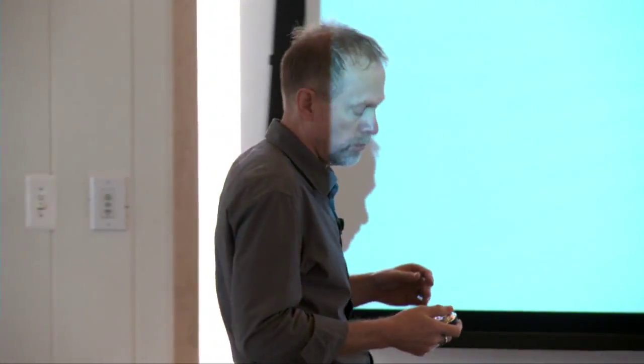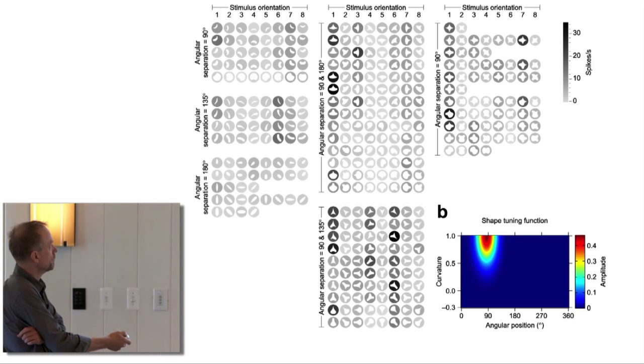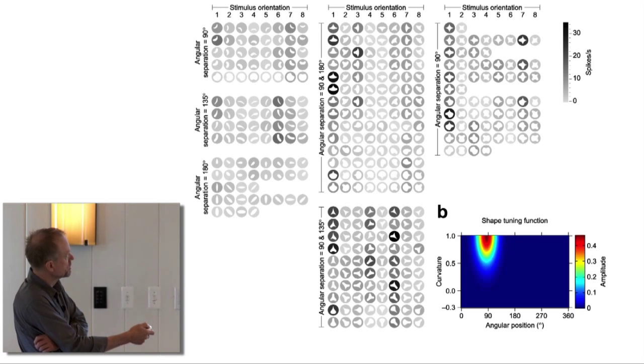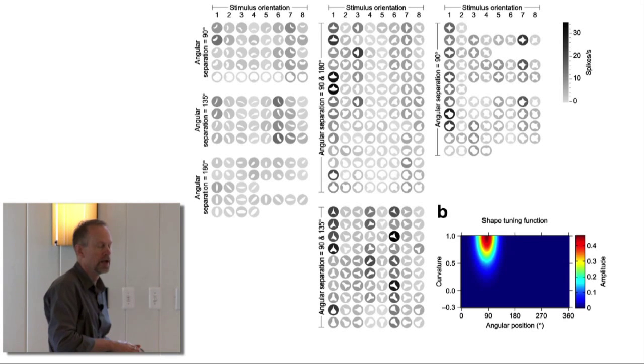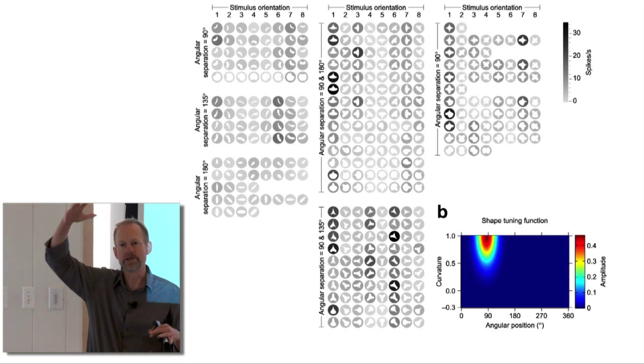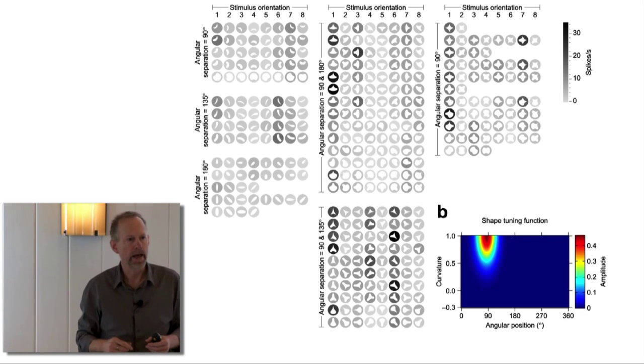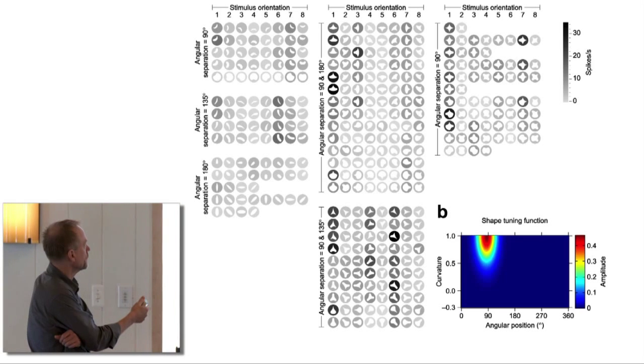We fit mathematical models that try to describe what kind of information cells or populations of cells in different stages of the ventral pathway encode. This is a relatively early attempt in V4. This shows the stimulus set we used to study a bunch of V4 neurons, intended to cover some range of the possible space of two-dimensional silhouette object outlines.